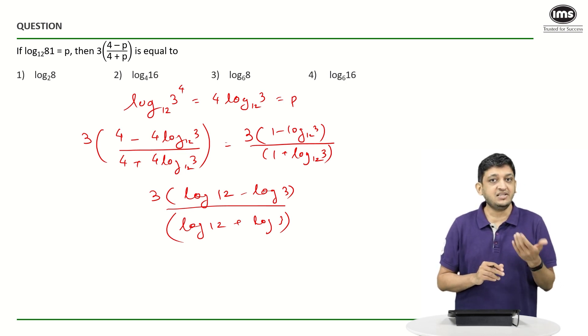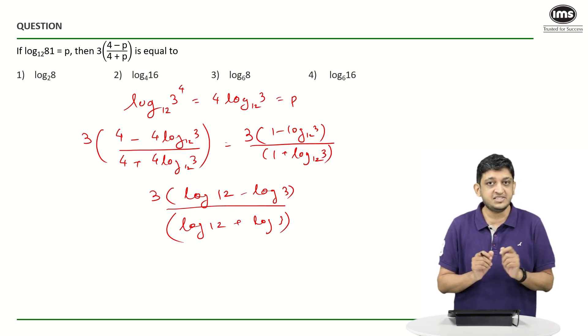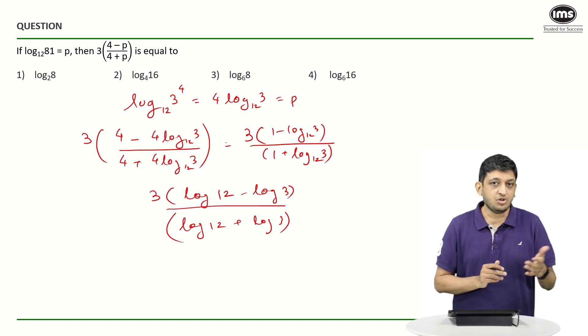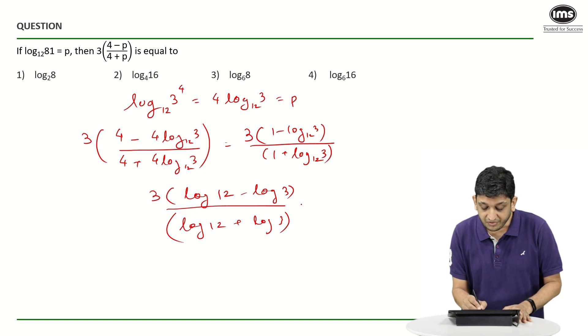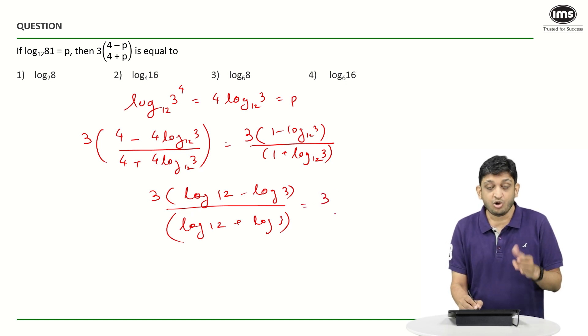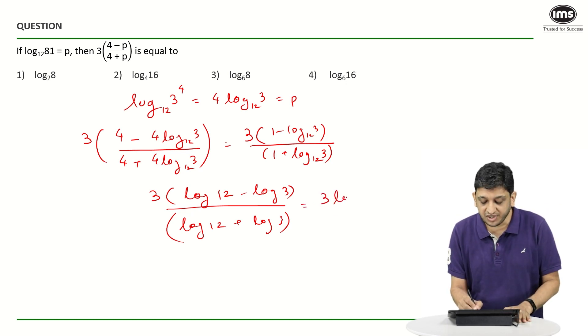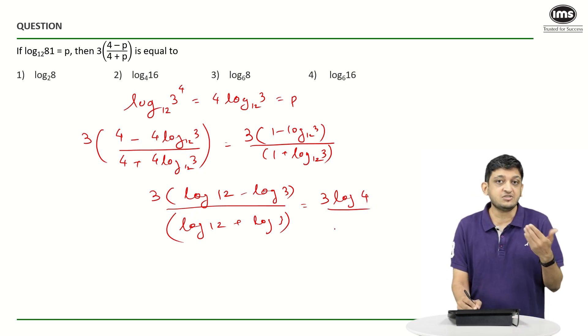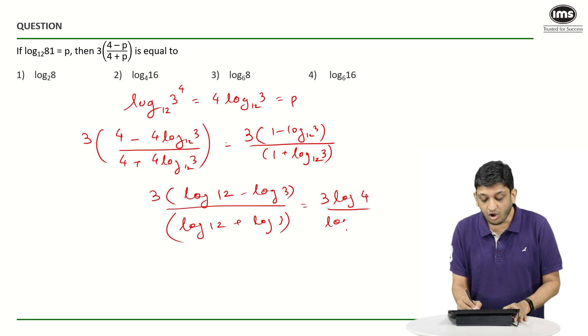We also know that log A minus log B is going to be log of A divided by B. This is the basic rule of logs and we also know that log of A plus log of B is going to be log of A times B. Here we are going to see that 3 times log of 12 divided by 3 is going to be log 4 and in the denominator you will have log of 12 times 3 that is 36.